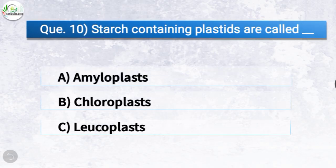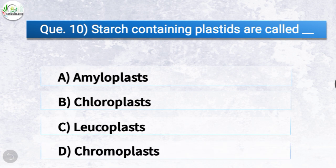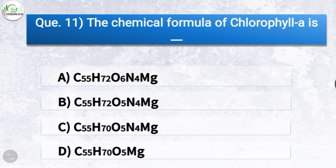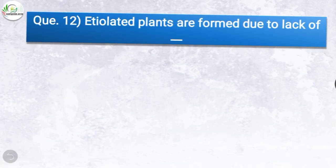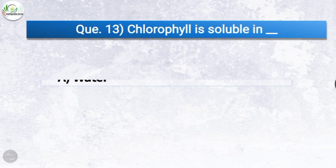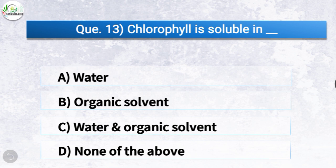Question 10: Starch-containing plastids are called what? Options: amyloplasts, chloroplasts, leucoplasts, or chromoplasts. The correct answer is option A — amyloplasts. Question 11: The chemical formula of chlorophyll a is C55 H72 O5 N4 Mg. Question 12: Etiolated plants are formed due to the lack of what? Options: light, Hg, Fe, or Mg. The correct answer is option A — light. Etiolated plants are formed due to the lack of light.